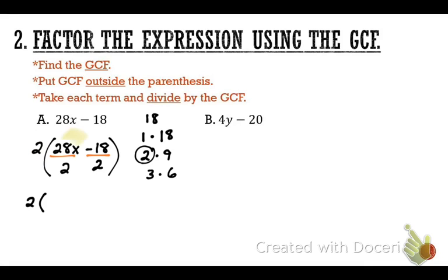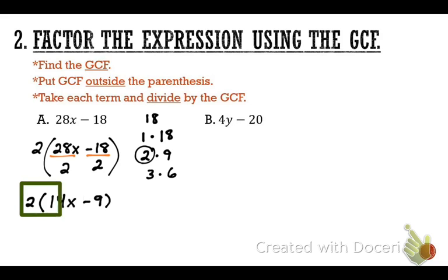What is 28x divided by 2? 14x. What is negative 18 divided by 2? Negative 9. So our final answer is 2(14x − 9).